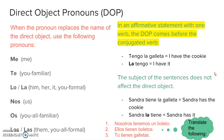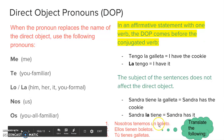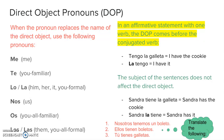Let's practice. You are going to replace the direct object with a direct object pronoun. Sentence one: Nosotros tenemos un boleto — we have one ticket. Number two: Ellos tienen boletos — they have tickets. Number three: Tú tienes galletas — you have cookies. Make sure you know your subject, the verb, and your direct object pronoun. Go ahead, pause the video, and we'll check your answers shortly.